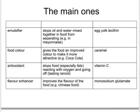There are food colours, which give food an improved colour and make it more attractive — for example, caramel is used in Coca-Cola to give it a nice brown colour. Antioxidants stop food, especially fats, from reacting with oxygen and going off; a typical antioxidant is vitamin C or ascorbic acid. Flavour enhancers improve the flavour of the food — for example, in Chinese food, monosodium glutamate might be added to give it an extra tang or kick.